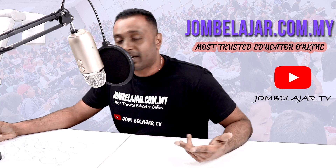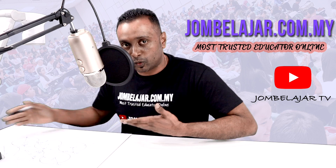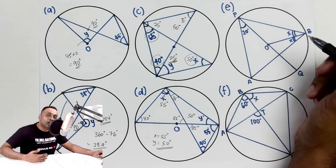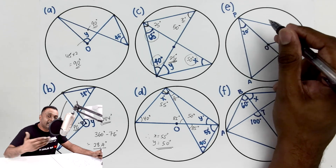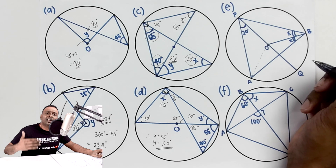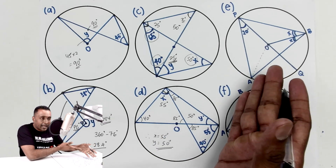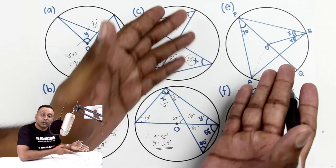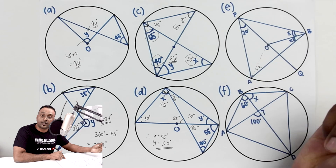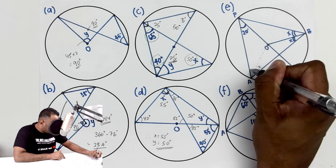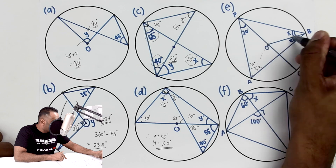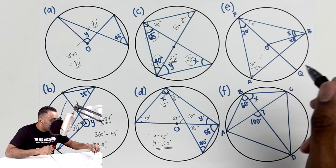Now question E. I want to show you a new technique — you can imagine and draw lines that are not given. For example, you can draw a radius yourself because any radius has the same length. If I draw a radius here, I form a triangle. Since both sides are radii, they are equal, so the base angles of that isosceles triangle are both X. Drawing another radius also creates another isosceles triangle with base angles both X.